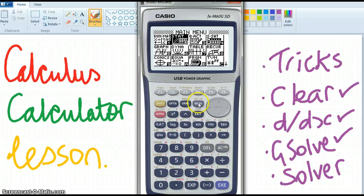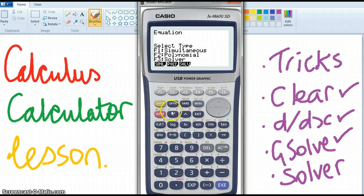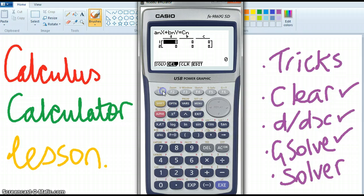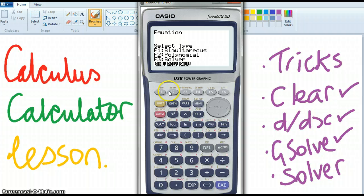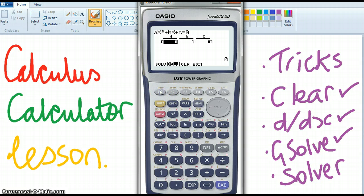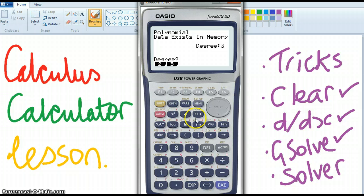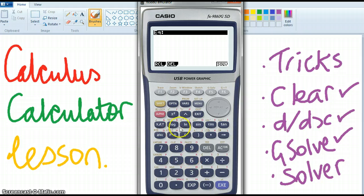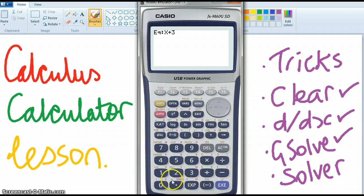Now we're going to do solver. So solver, if we go to equation you've got simultaneous equations where you can have 2 unknowns or 3 unknowns or 4 unknowns. You've got polynomial degree 2 but also you've actually got polynomial degree 3 which could be handy. And you've also got your solver so solver you can put anything in, you can go x plus 3 shift equals x squared minus 8 for example.